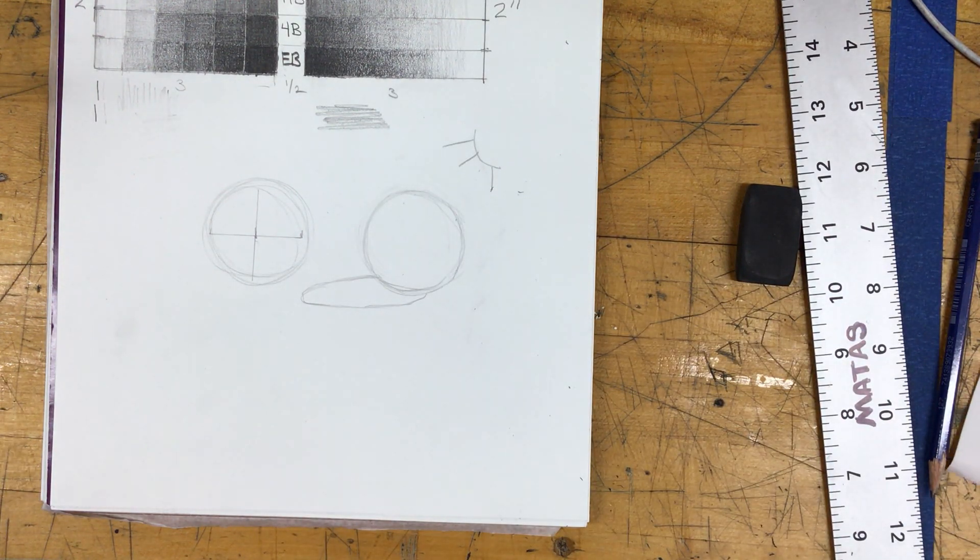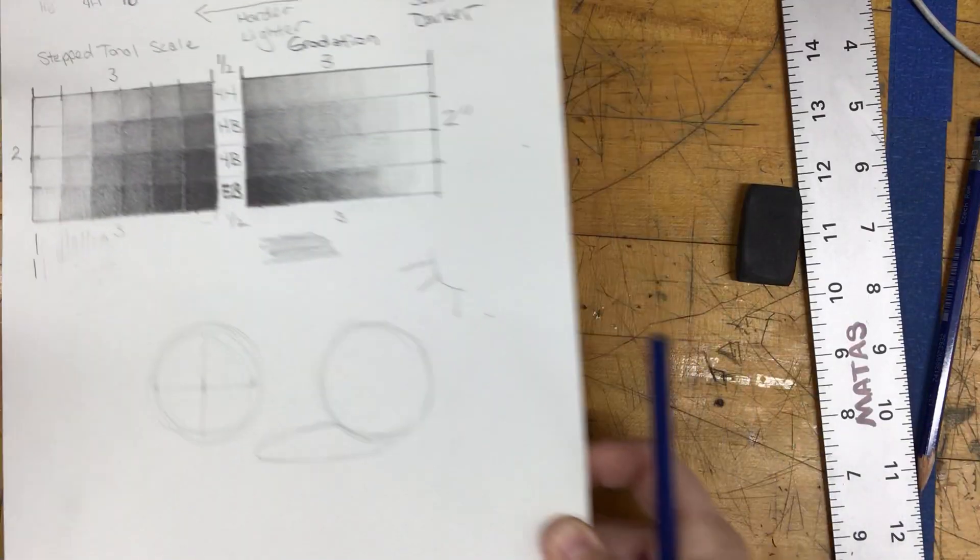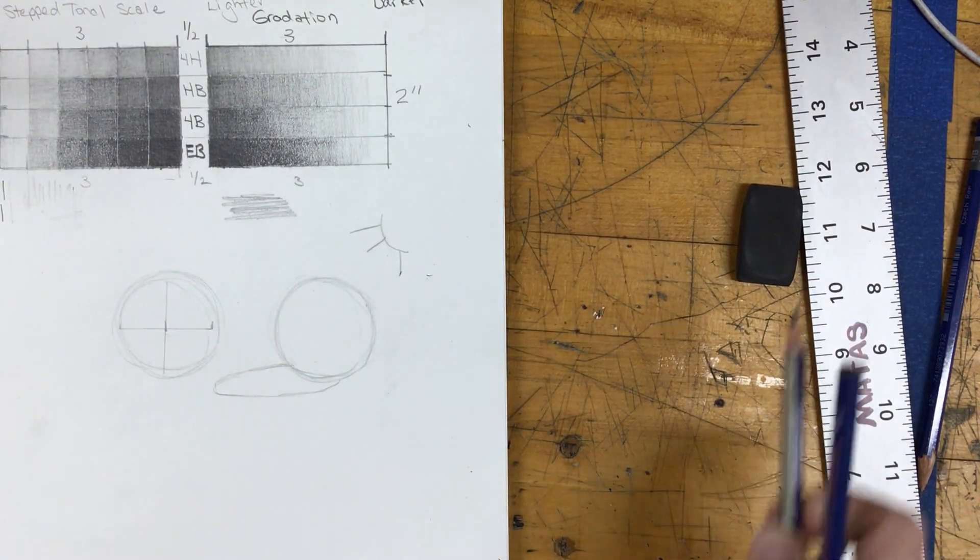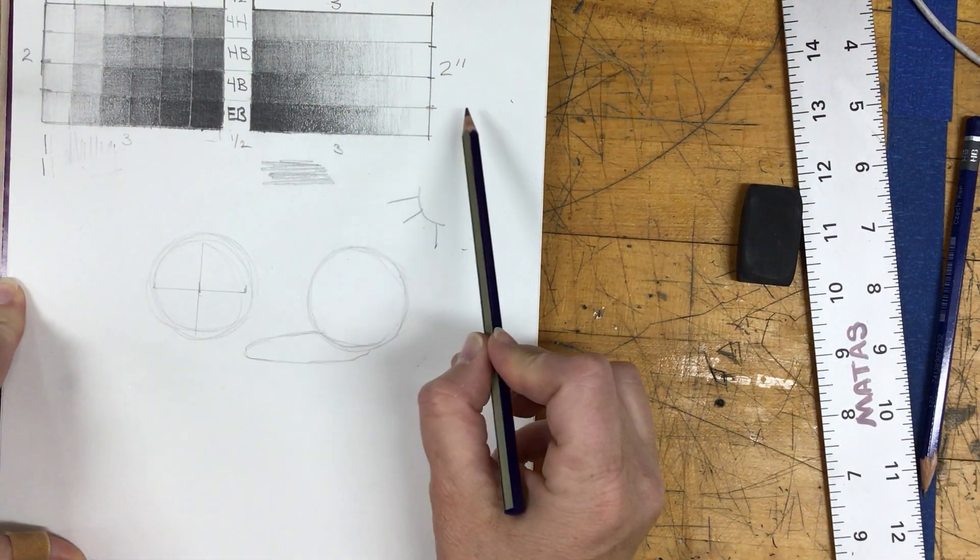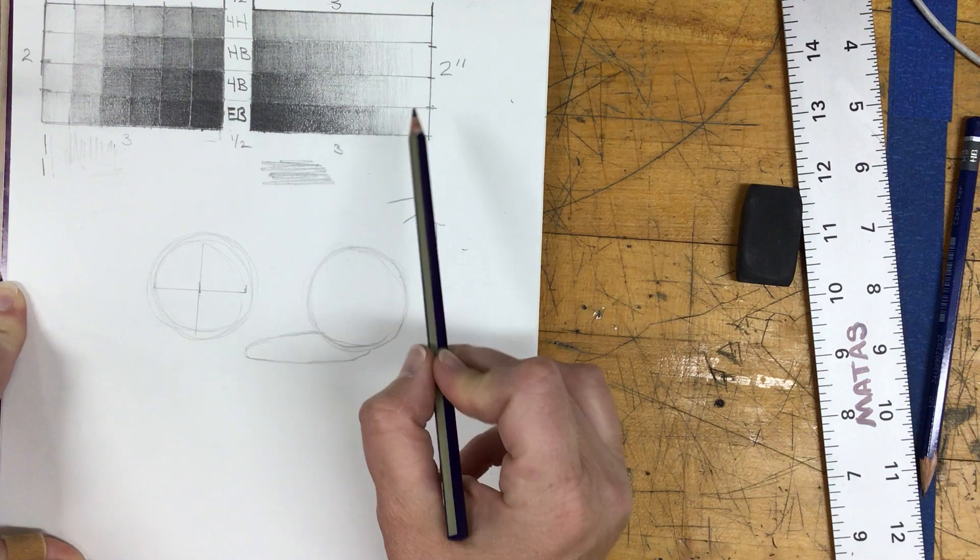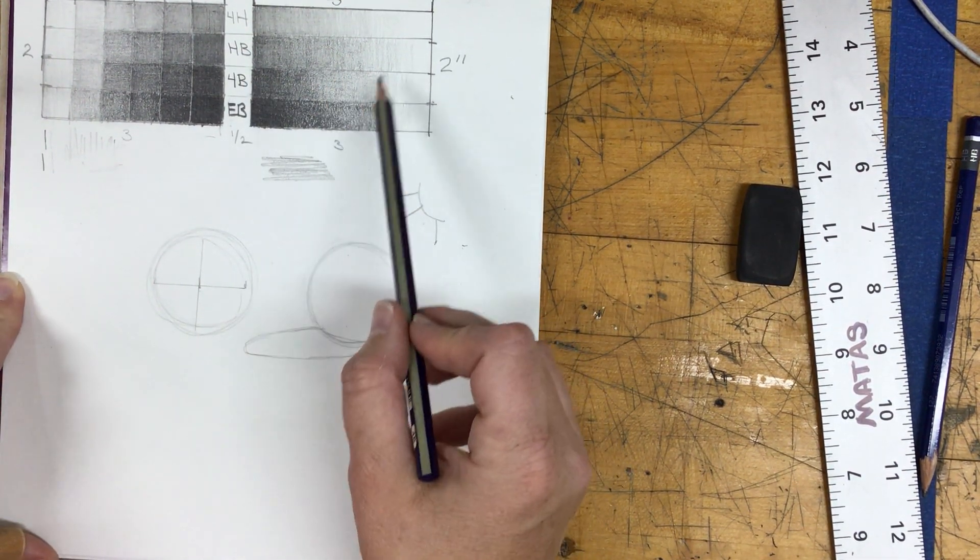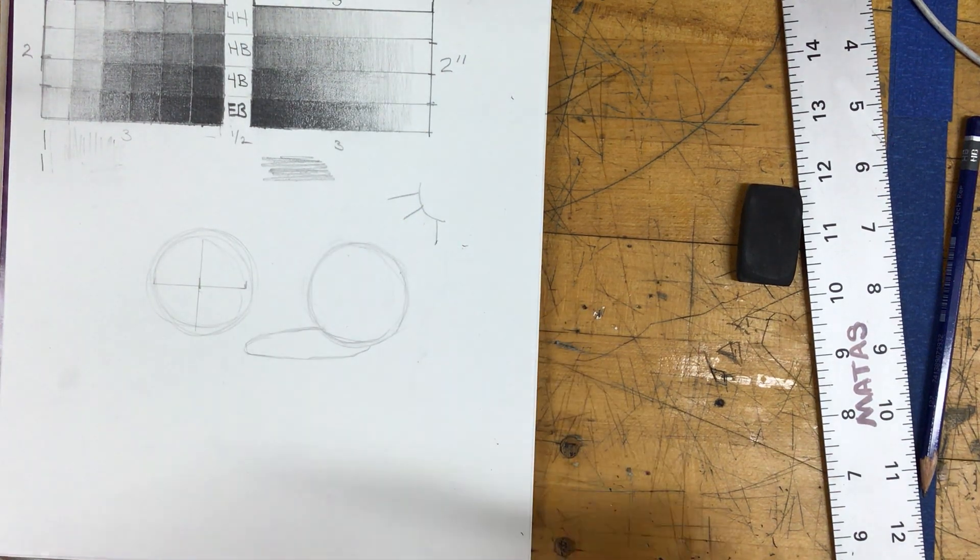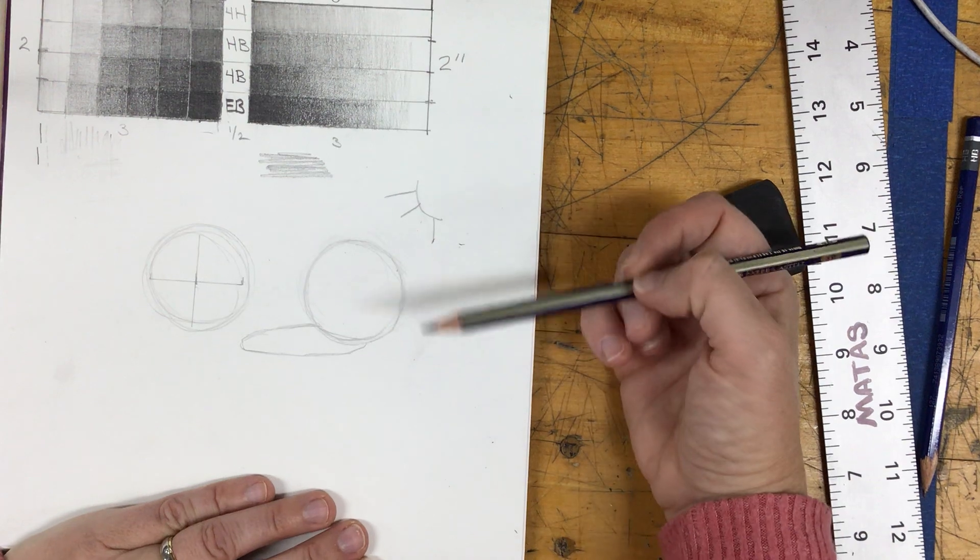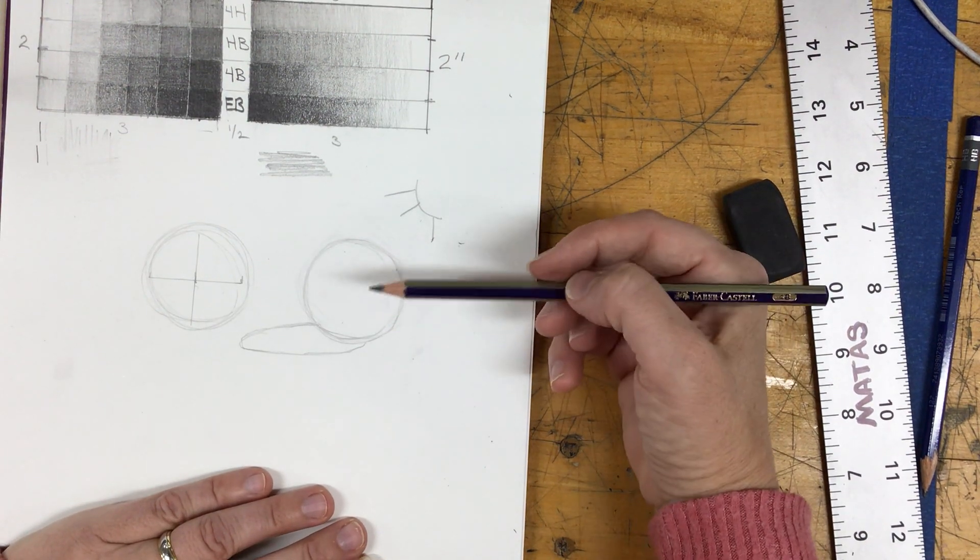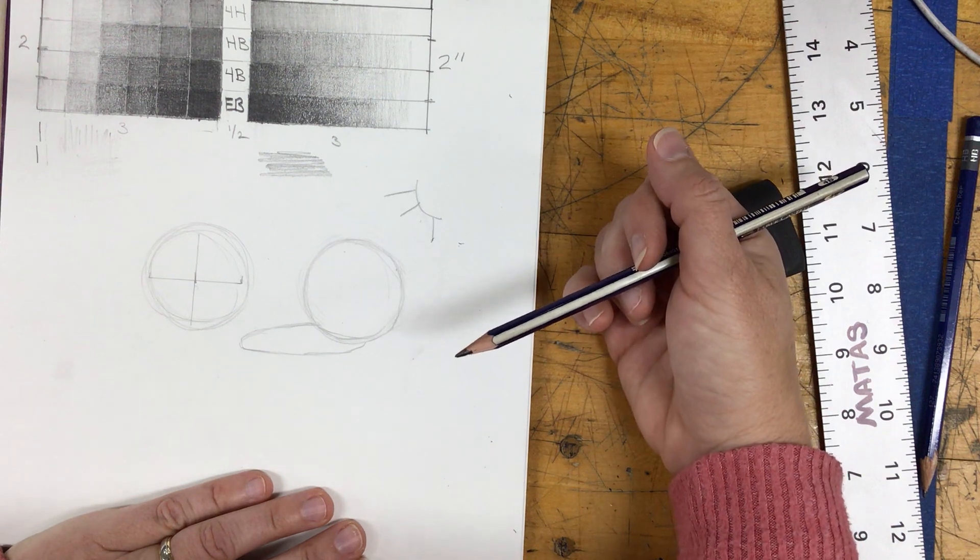And then when we're shading, I'm going to use my 4B pencil because I can get a really nice range of value. You could also use your HB pencil if you wanted to as well, but I would not use the 4H. The 4H isn't very good for shading. When you're shading, I would suggest starting with your darker values first. I think it's much easier than starting with your lightest.